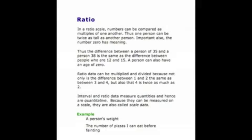Let's review briefly. We have four types of data: nominal, ordinal, interval, and ratio. As you set out the broad set of nominal data, inside that there is ordinal data. Inside ordinal data there is interval data, and inside interval data there exists ratio data.